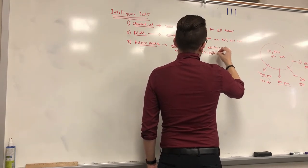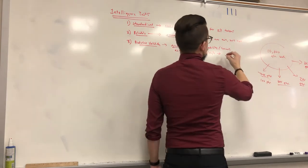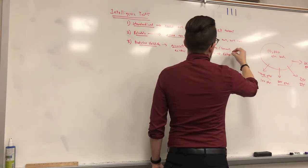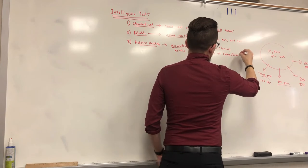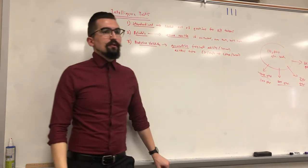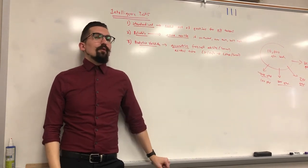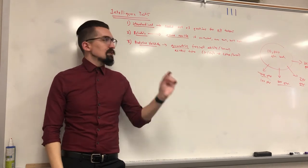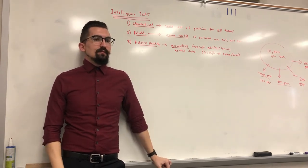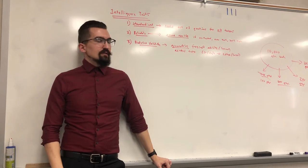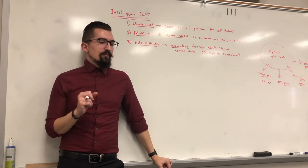Intelligence tests given in junior high or high school accurately predict intelligence and success in college and career. That's why intelligence has a 0.6 correlation coefficient for analyzing college and career success — higher than any other single factor.